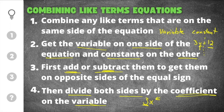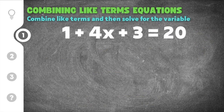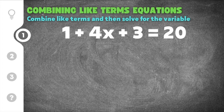Let's go ahead and start on some practice problems for combining like terms equations. The first practice problem gives us 1 plus 4x plus 3 equals 20. The first step is to combine all the like terms that are on the same side of the equal sign together.